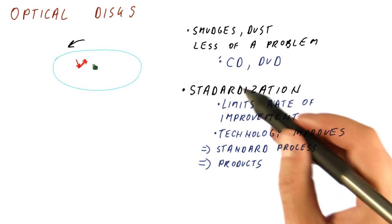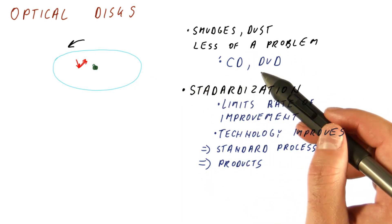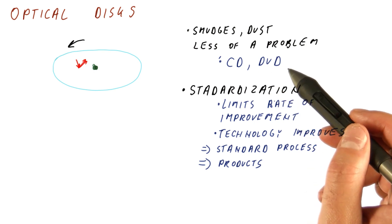So usually optical disks are used for carrying data around, storing music, movies, and so on.